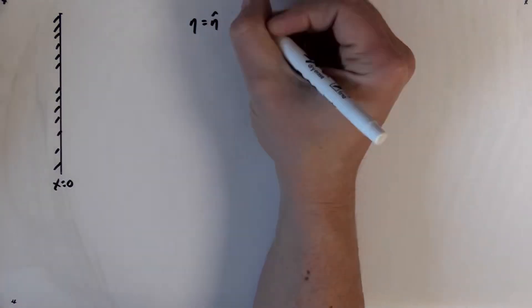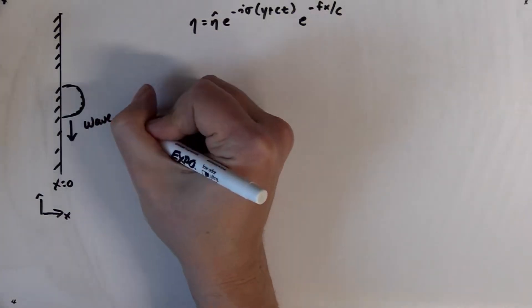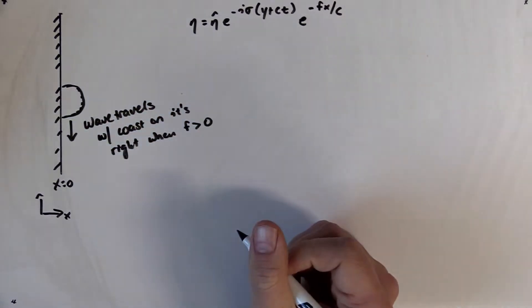It just so happens when you work all this out that you have a preferred direction for the wave propagation. Particularly when f is greater than zero, waves are going to travel to the south. In other words, the coast is going to be on the right.